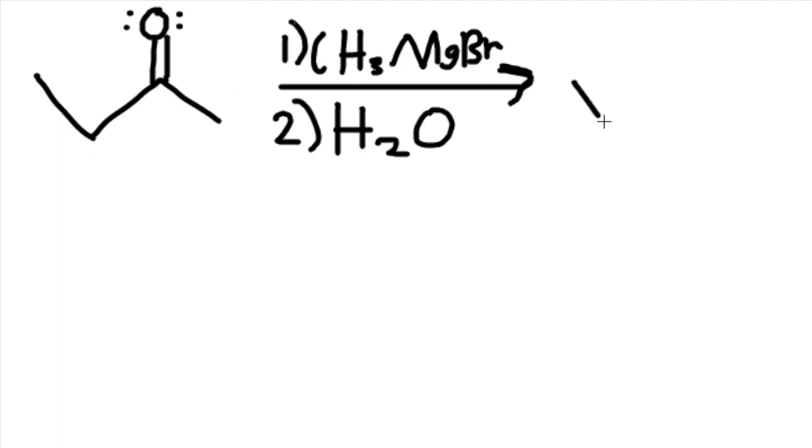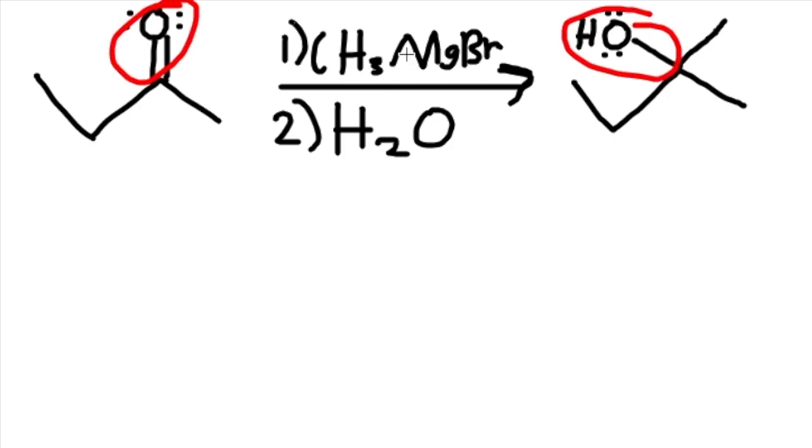So our product for this would have the same structure, but take it off, add a carbon, an OH. So we remove the ketone, we put an OH, and add a carbon because of CH3 in the reactant.